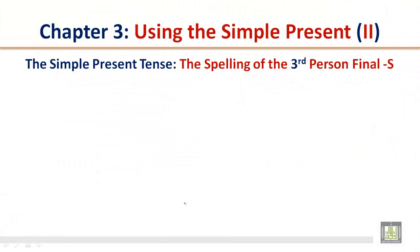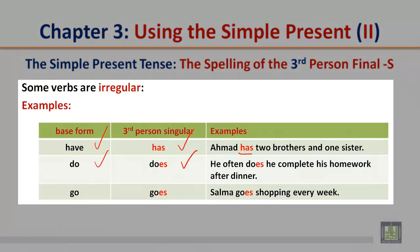Some verbs are irregular. The base form 'have' becomes 'has' — Ahmad has two brothers and one sister. The base form 'do' becomes 'does' — how often does he complete his homework after dinner? The base form 'go' becomes 'goes' — Salma goes shopping every week.